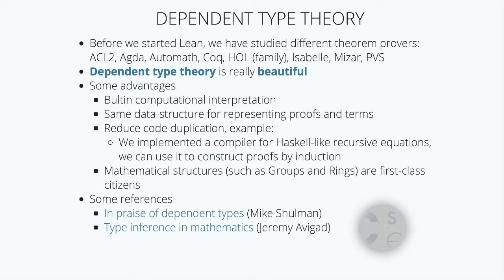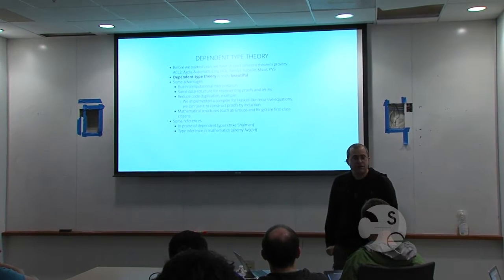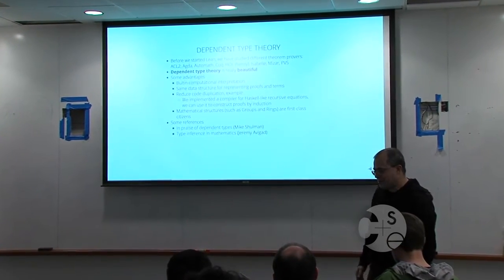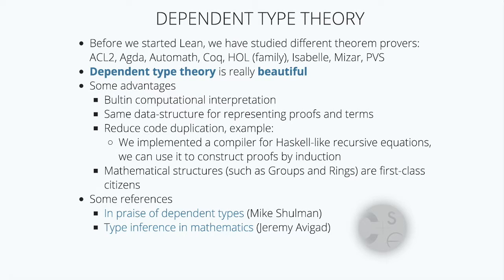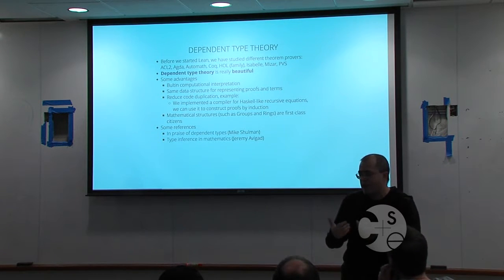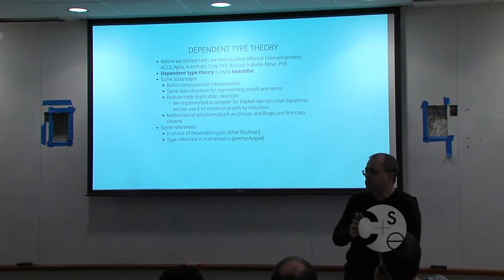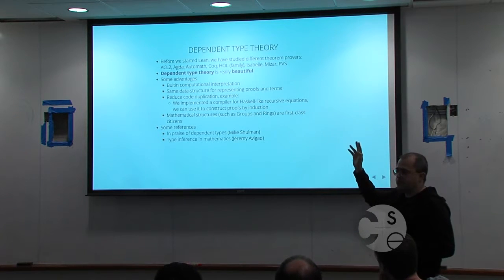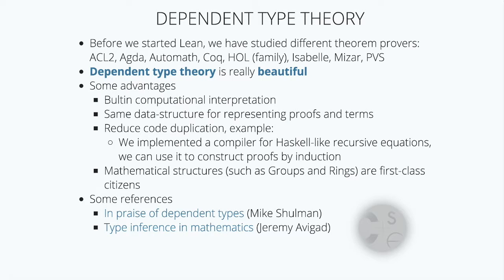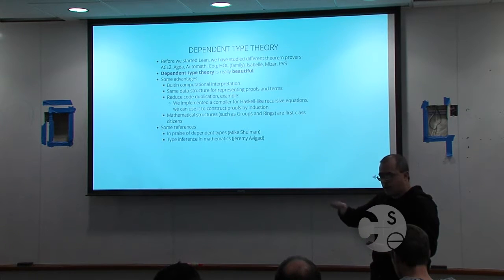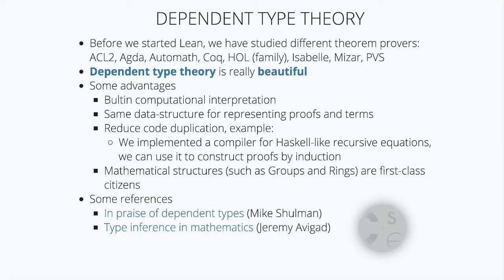Why dependent type theory? I think it's really beautiful, and from the engineering point of view there are many advantages. You have a built-in computational interpretation for your terms. As a developer, you save a lot — it's the same data structure you use to represent both terms and proofs, so you don't need to implement things twice. We implemented a compiler that takes a set of recursive equations and compiles them into Lean's built-in primitives. Since there's no difference between proofs and terms, you automatically have a mechanism for doing proofs by induction using the same recursive equations compiler.